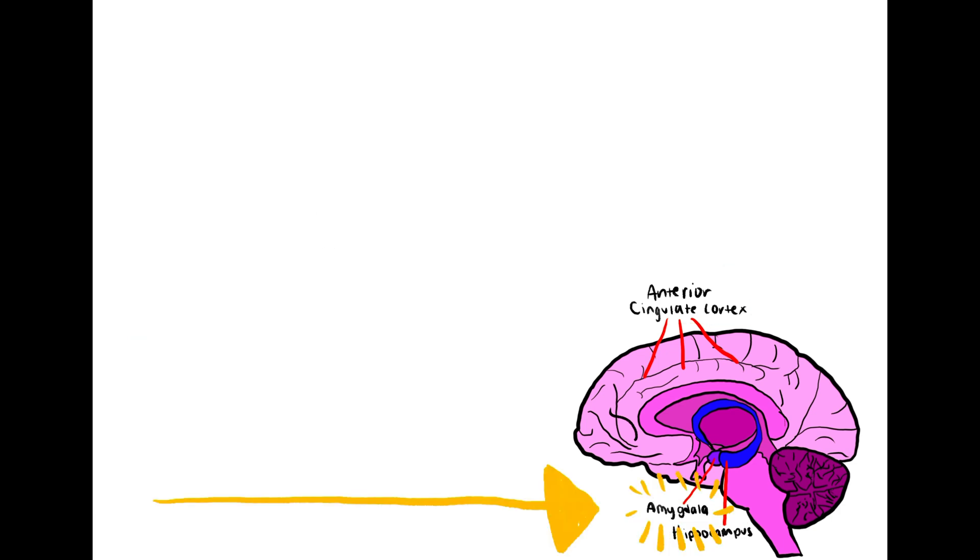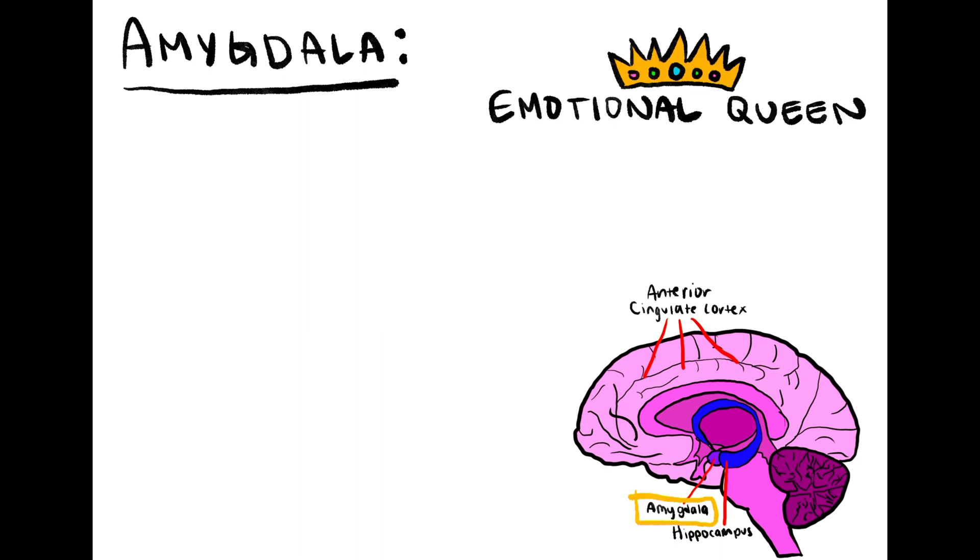Beginning with amygdala. The amygdala is the emotional queen. It's responsible for emotional processing specifically with emotions such as aggression, fear, and anxiety.